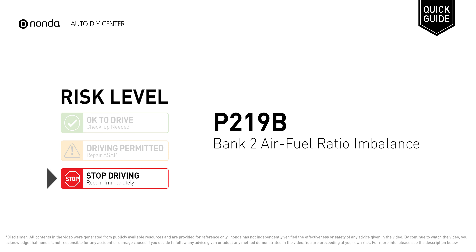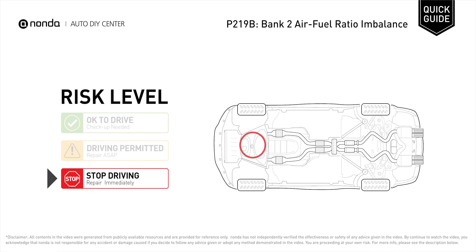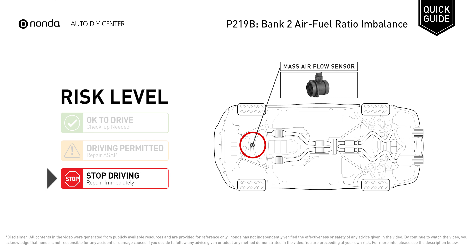P219B is a diagnostic trouble code for bank two air fuel ratio imbalance. Under this circumstance, stop driving and repair your vehicle immediately. It means that the PCM has detected an air to fuel ratio imbalance for the bank of the engine which does not contain the number one cylinder.